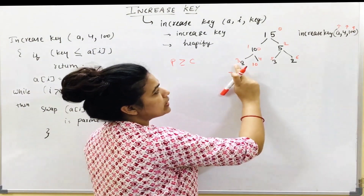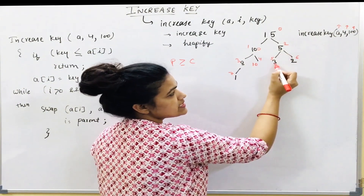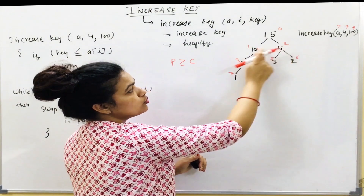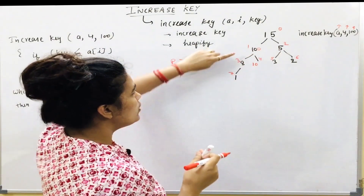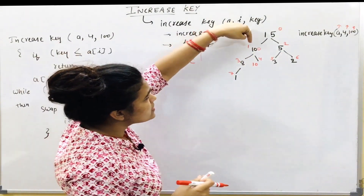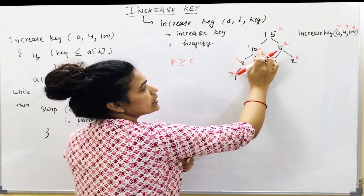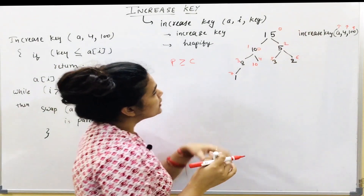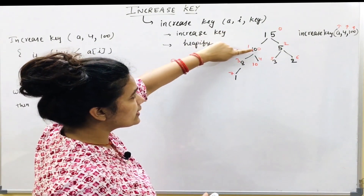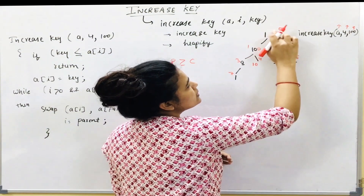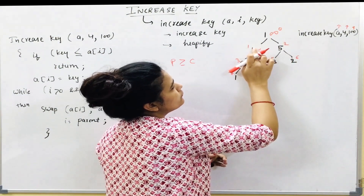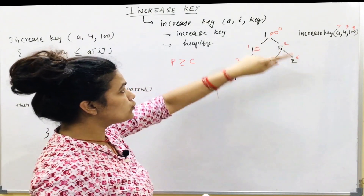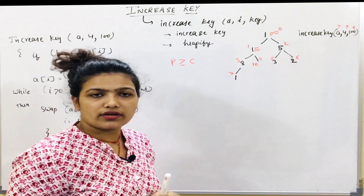Moving through the nodes: index 3 has children 3 and 2 with parent 5 — property satisfied. At index 1, parent is 100 and child satisfies the property. At index 0: parent is 15, but child is 100, so 100 swaps with 15. Now the heap satisfies the max-heap property at all nodes.